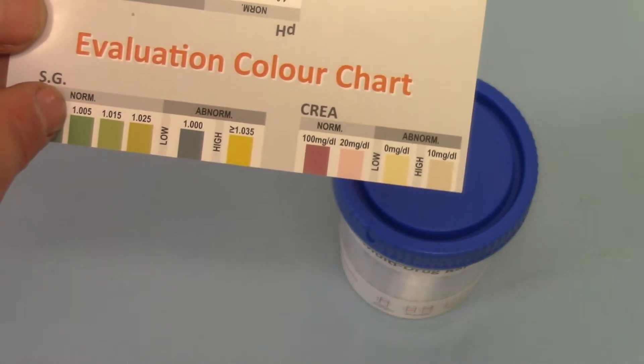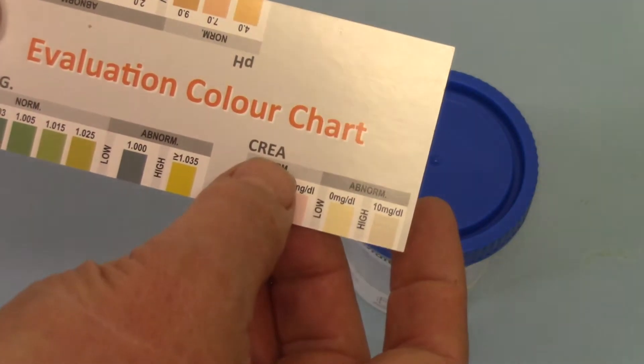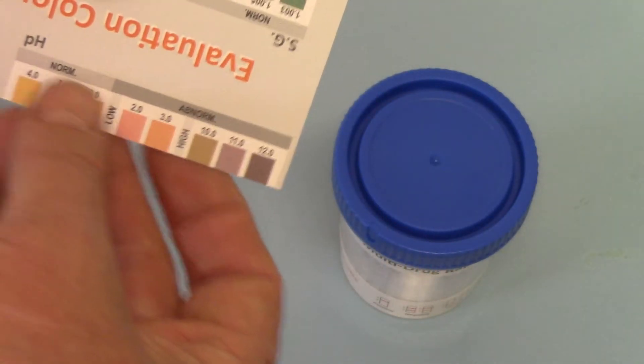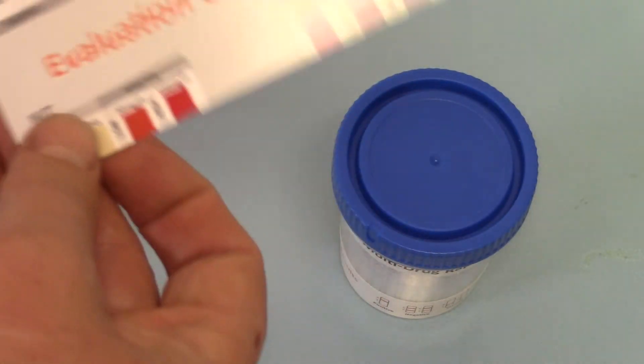You've got SG which is specific gravity, CRE which is creatinine, and pH showing here and on the reverse.